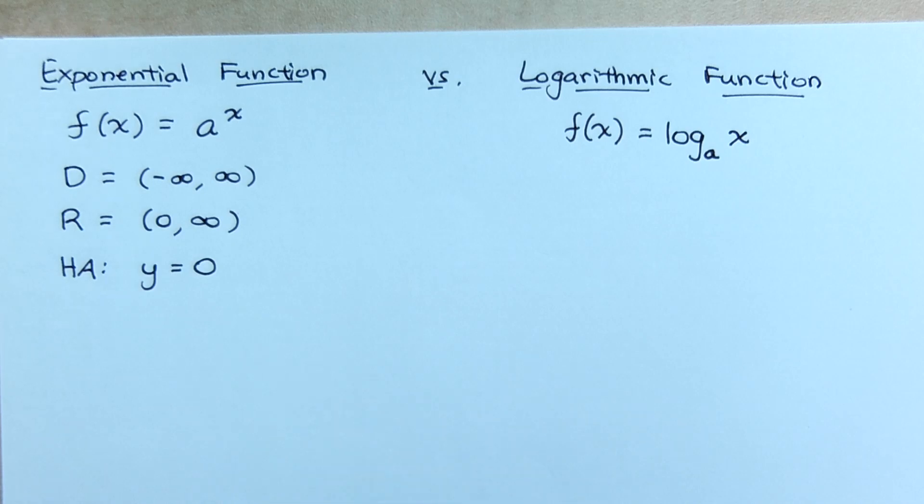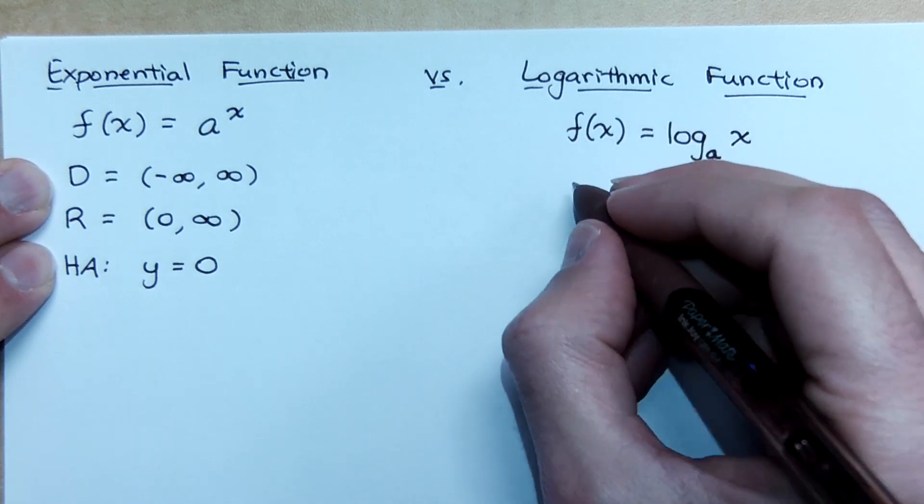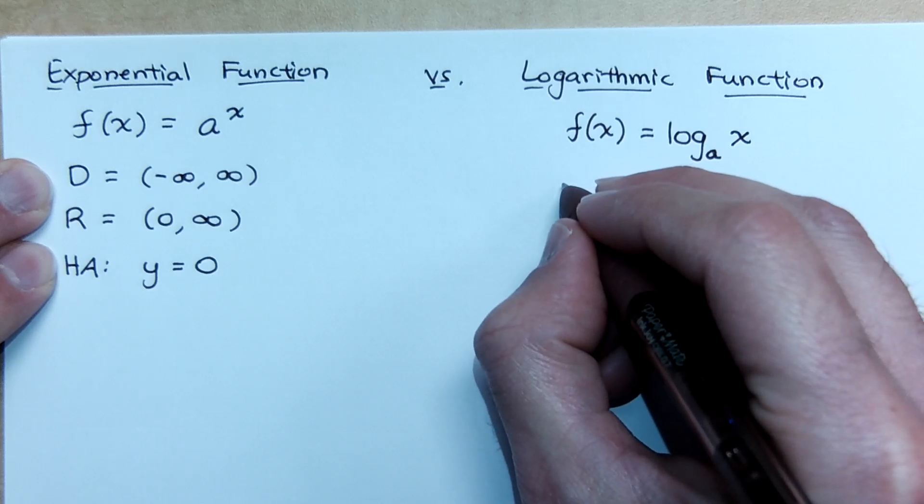So if this is what we have for our exponential, and we said that the logarithmic function is the inverse, tell me what information you get. If I tell you domain, range, and horizontal asymptote, what does that tell you about your inverse? Your range is negative infinity to infinity.